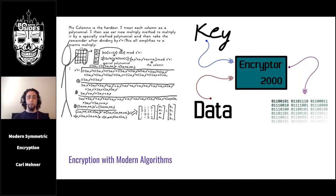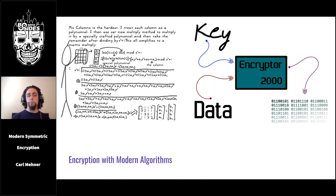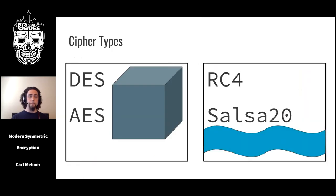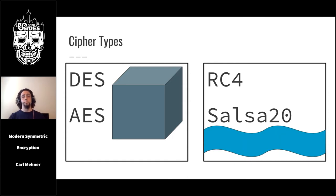In this talk, I want to take the road in between those two views to give you a better understanding of the current best practices for safely encrypting data. First, some background: there are two main types of symmetric key ciphers — block ciphers and stream ciphers. Both types have output indistinguishable from random noise as long as the algorithm is cryptographically secure. DES and AES are block ciphers; RC4 and Salsa20 are stream ciphers.